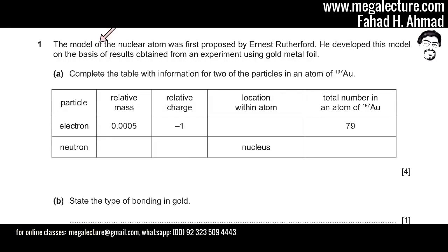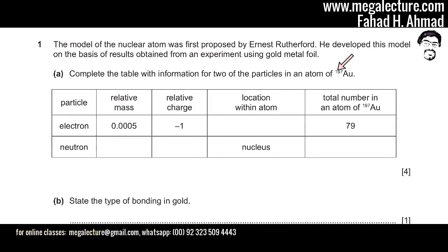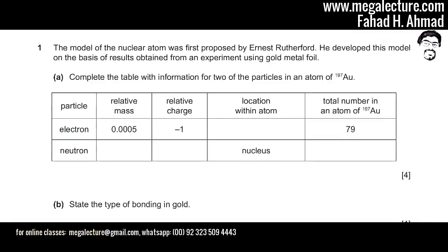The question states that the model of the nuclear atom was first proposed by Ernest Rutherford, who developed this model based on results from an experiment using gold metal foil. In Part A, we need to complete a table with information for two of the particles in an atom of AU, which is gold. The atomic mass is given as 197, and looking up the proton number of AU in the periodic table gives us 79.